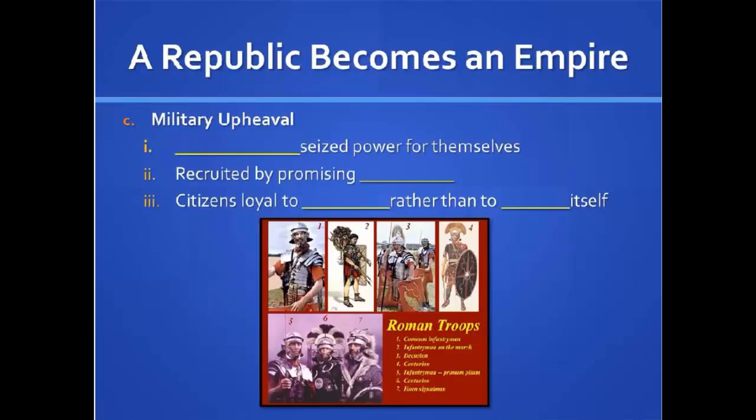Military upheaval: generals seized power for themselves as time went on. They wanted more power and ended up trying to take control. In order to get soldiers for their cause, these generals recruited by promising land to different people, whether they were the poor or the slaves — saying if you give your trust in me, I will give you land. Citizens became loyal to the generals rather than to Rome itself. Because the generals were promising something that the city wasn't, the poor and the slaves would take up the generals on their offer for this opportunity to get land.